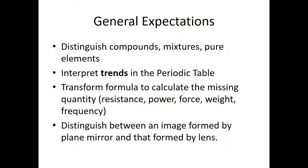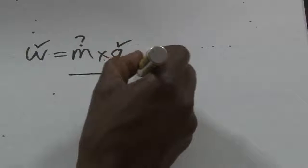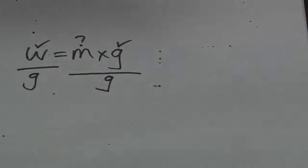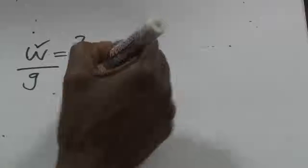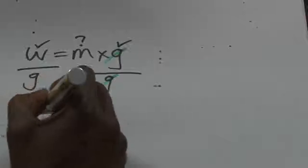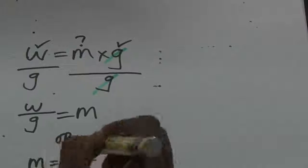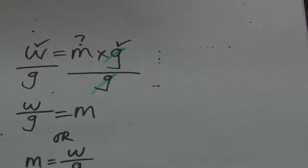Let's say we want to work with weight. Weight equals mass times gravity. If you are given the weight and the gravity and you want to find the mass, you divide both sides by gravity so that gravity cancels, and in the end you have mass equals weight over gravity. That's how you transform the formulas.